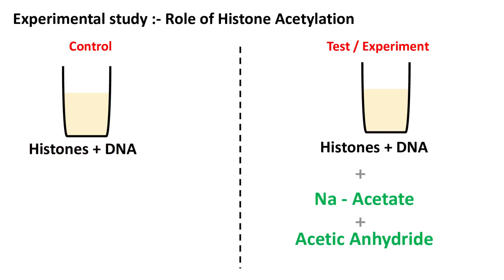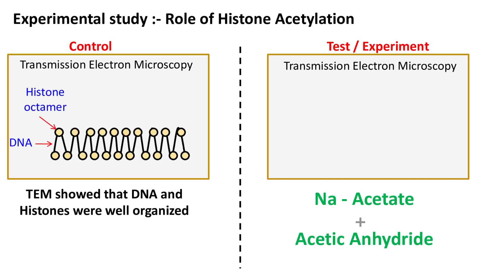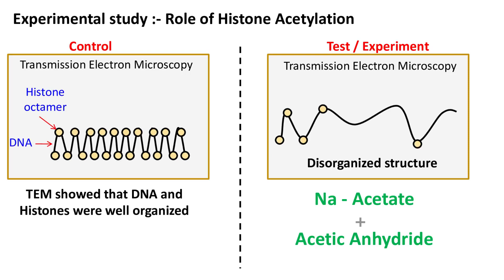Now let's come back to our in vitro experiment, which was based on organic chemistry. Once the histones were acetylated, both groups were studied under transmission electron microscopy. The results showed that in the control group, the histones were very well organized. Whereas in the experimental group where histones were acetylated, the structure was disorganized and showed fewer nucleosomes on the DNA. This experiment shows that histone acetylation greatly affects the binding of histones with the DNA, as the presence of acetyl groups does not allow histones to bind the DNA.